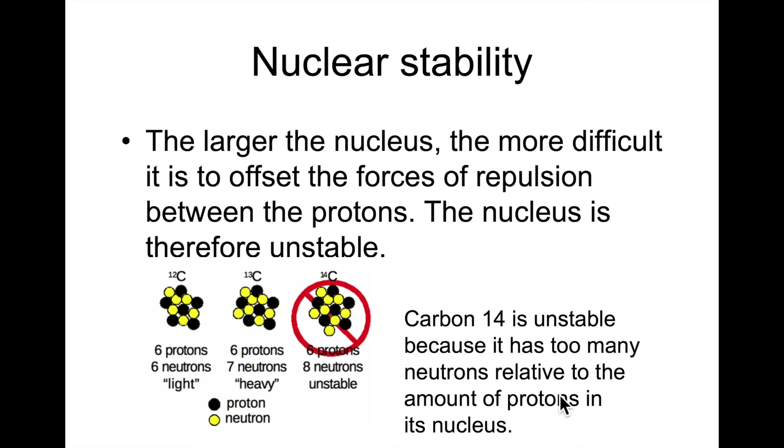First we have to talk about nuclear stability—what is stable, what is unstable. We've talked about isotopes in the past. Isotopes are variations of the same element. They have the same number of protons but a different amount of neutrons, so therefore their mass is different.